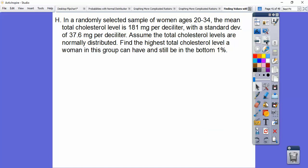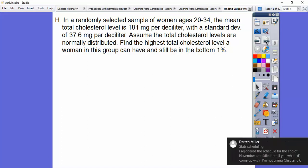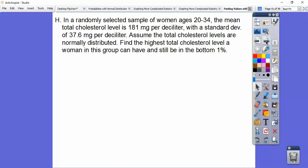So in a randomly selected sample of women ages 20 to 34, the mean total cholesterol is 181 milligrams per deciliter with a standard deviation of 37.6. So assuming the total cholesterol levels are normally distributed, find the highest cholesterol levels a woman in this group can have and still be in the bottom 1%.